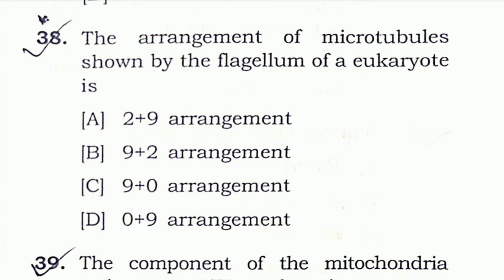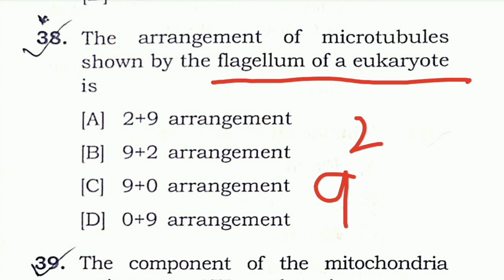Question 38: The arrangement of microtubules shown by the flagellum of eukaryotes is — in prokaryotes the flagellum arrangement is 2, but in eukaryotes it is 9+2. So the right answer is option B.